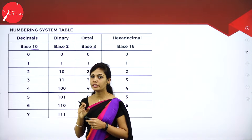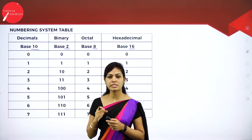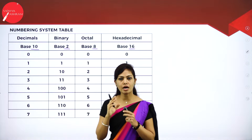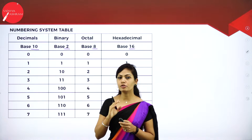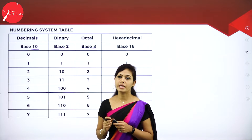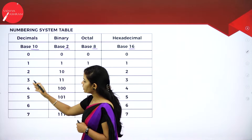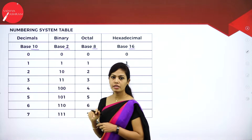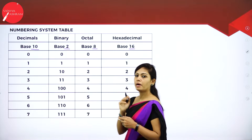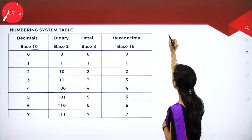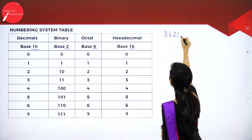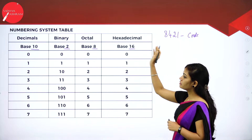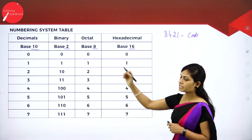Decimal values means generally all the numbers we can represent are decimal values. Without a base value we can assume all the digits are decimal. Using decimal values, how to convert to binary values? We use 8, 4, 2, 1 code. That means 2 power 3 is 8, 2 power 2 is 4, 2 power 1 is 2, and 2 power 0 is 1. This is called 8421 code. Using powers of 2 we can find the binary values. Add these numbers: 8 plus 4 plus 2 plus 1 is 15.